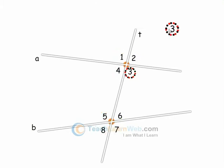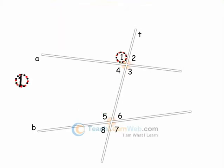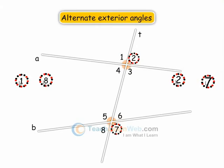Angles 3 and 6, 4 and 5 are pair of alternate interior angles. Angles 1 and 8, 2 and 7 are pair of alternate exterior angles.